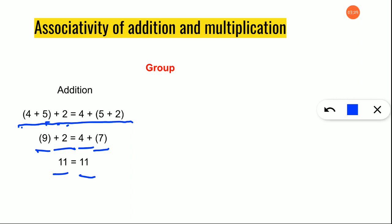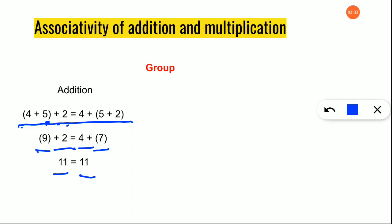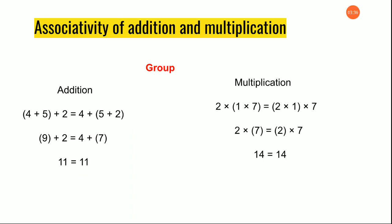Nine plus two gives eleven, and four plus seven also gives eleven. So we can say addition is associative. Same way it works for multiplication — we just interchange the place of the brackets and the answer is the same.